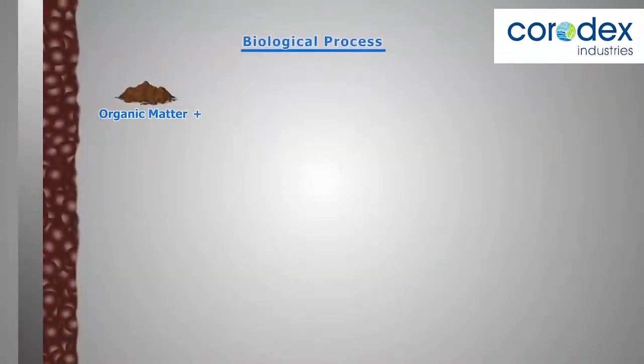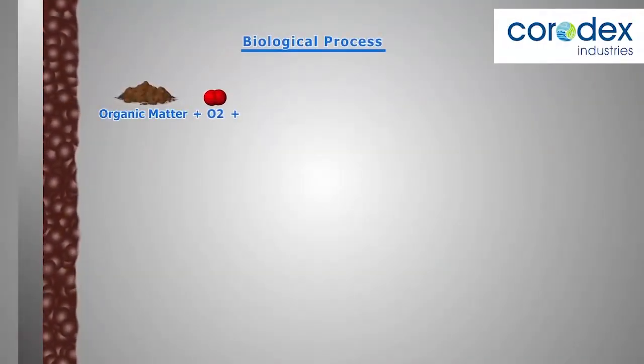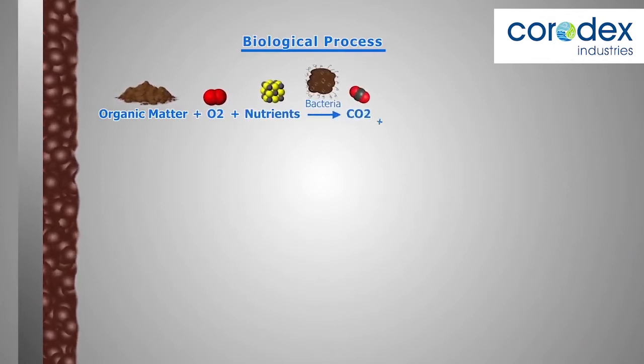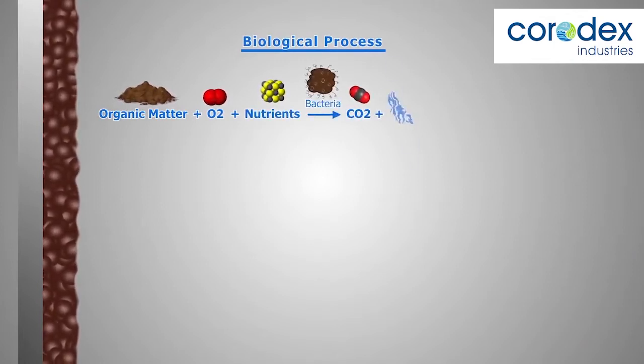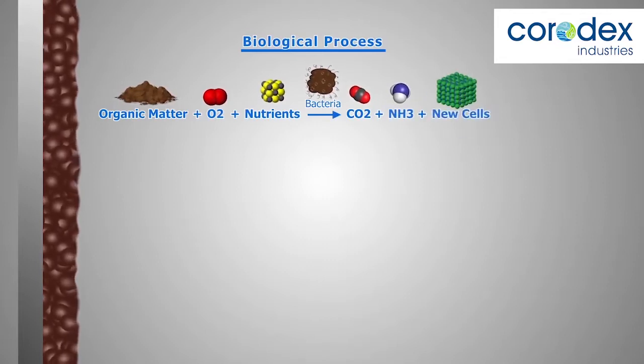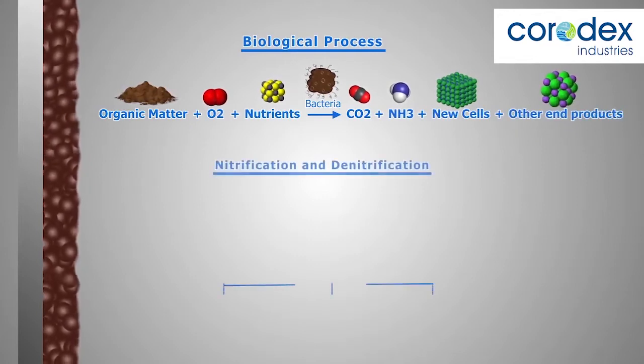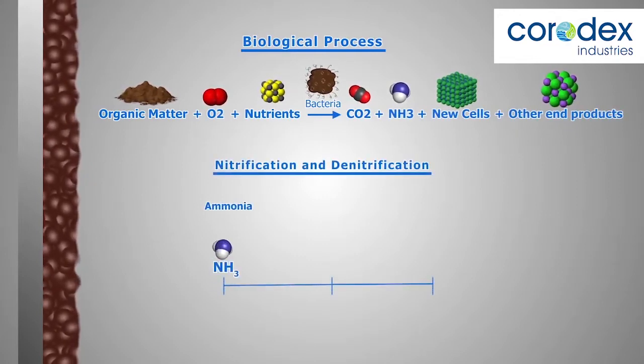The biological process consists of several steps, briefly the biomass growth, biomass sloughing, nitrification, and partial denitrification. This is a continuous process of biomass growth where several types of microorganisms are utilizing nutrients and oxygen, followed by biomass detachment.